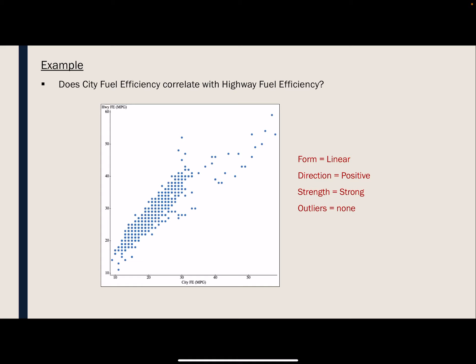Looking at that first graph — the relationship between city fuel economy and highway fuel economy — if I was asked to describe the scatterplot, I would say that the form is linear. It's not going to create a perfect straight line, but you can see a linear pattern. In Chapter 7, we'll look at how to find the line that fits this linear pattern. The direction is positive — it's going uphill. This has a strong association, and there aren't any noticeable outliers, though some people might question one point.